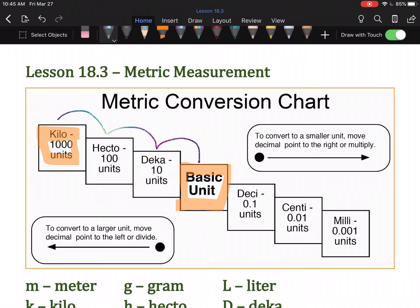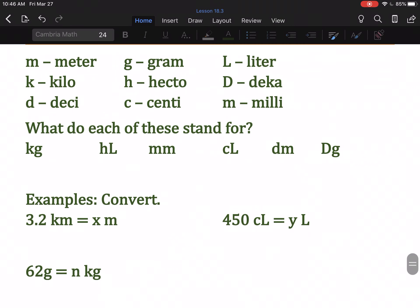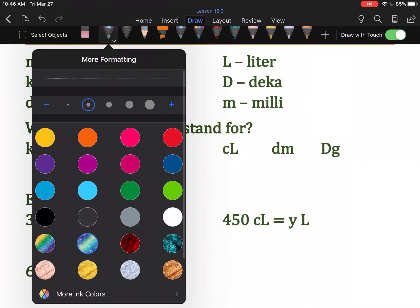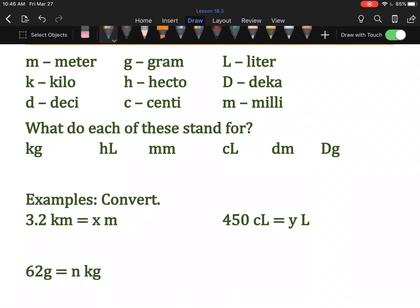So, that means if I pop down here and take my 3.2 and I grab that decimal point, move it one, two, three places to the right, and fill in my holes, I get 3,200, that is a comma, 3,200 meters. And that's it. We're done. All this is, is sliding around a decimal point.